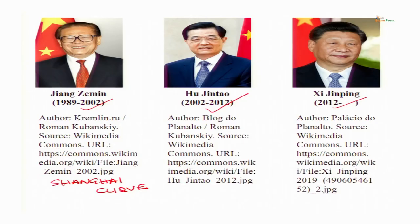Jiang Zemin was selected by Deng Xiaoping. Similarly, Deng Xiaoping had also selected Hu Jintao to be the successor to Jiang Zemin — this is known as the grandfathering process. He selected his successor and also the successor of his successor. Hu Jintao did not belong to the Shanghai clique; he came from the Communist Youth League, so he is known as a youth leaguer or Tuanpai.